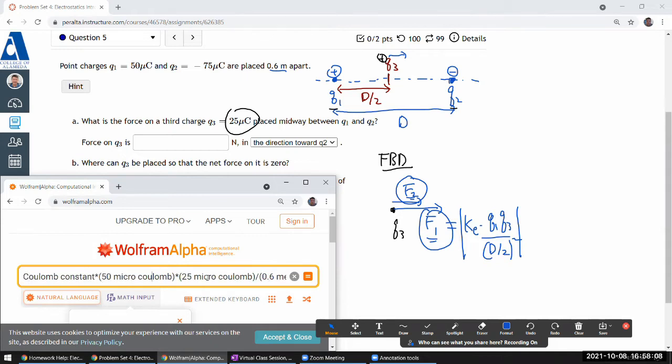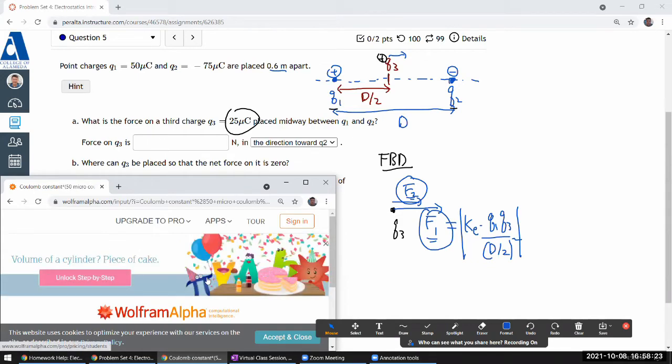Oh wait, 0.6 meters isn't right. It's 0.6 divided by 2, so it should be 0.3 meters squared. Yeah, okay. So sum of those two forces ought to be it.